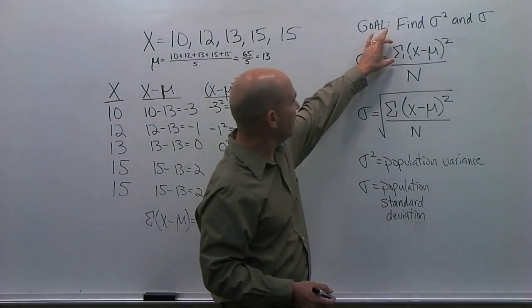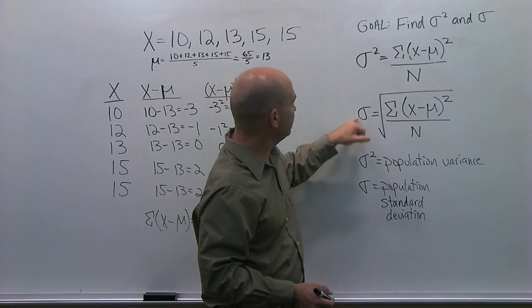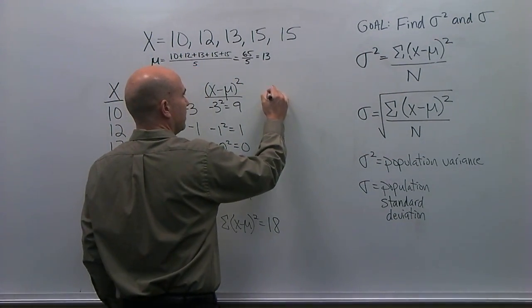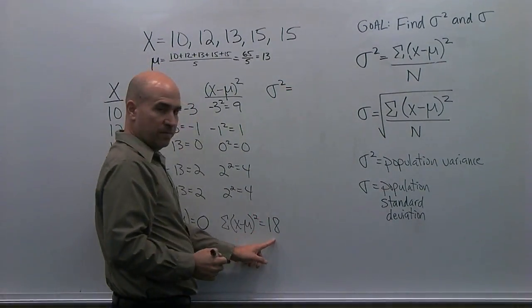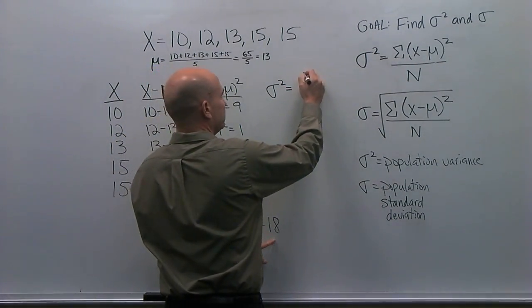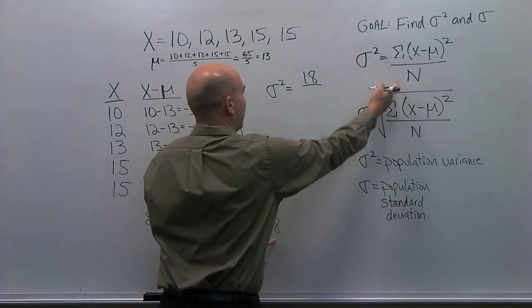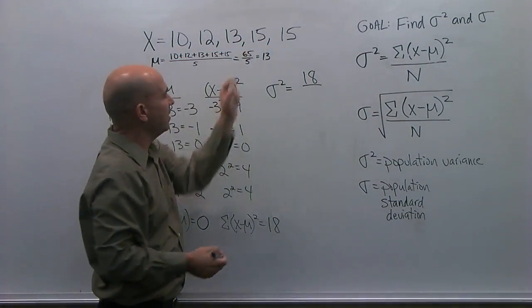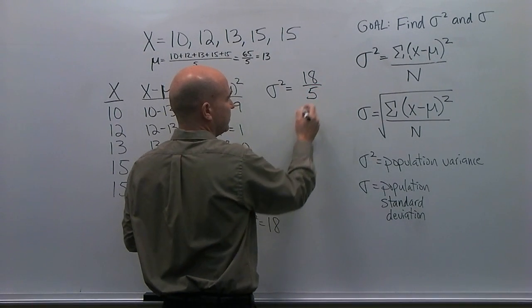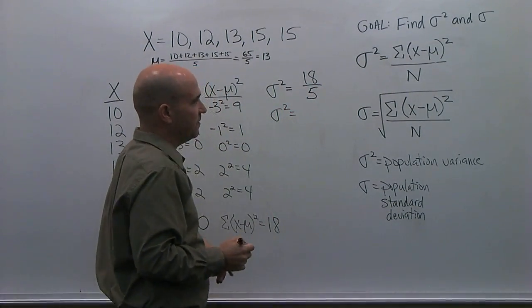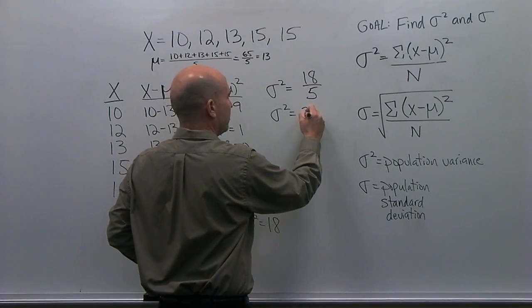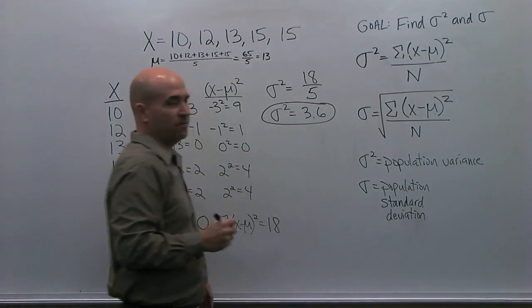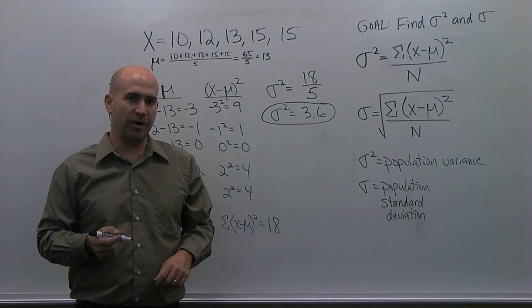So, I've got the numerator for each of these values. So, we're almost done. Moving over here, the population variance is equal to 18 divided by n, which once again is 5. So, we have 5 values, and when I solve for that, the variance is equal to 3.6. The population variance is equal to 3.6.